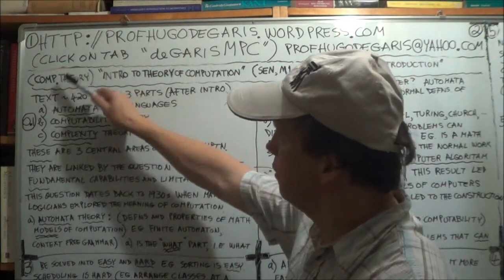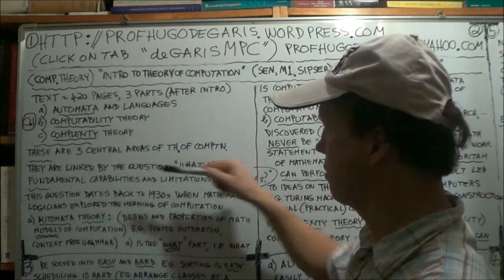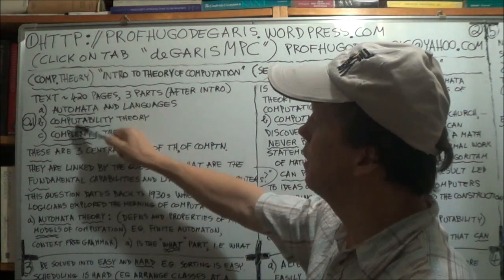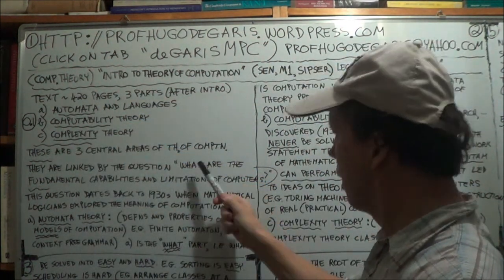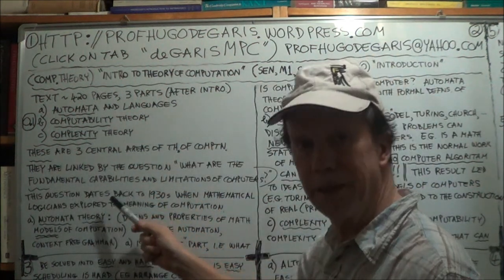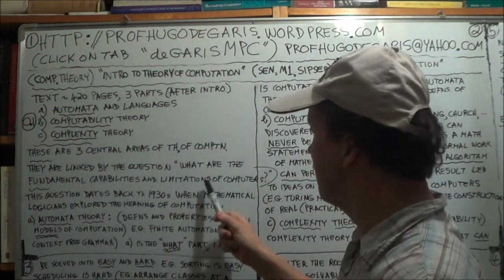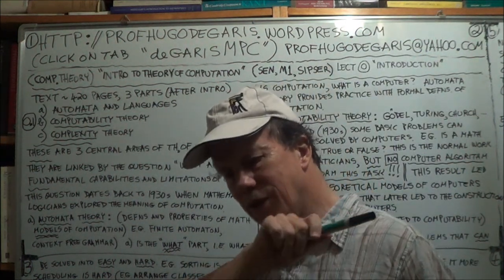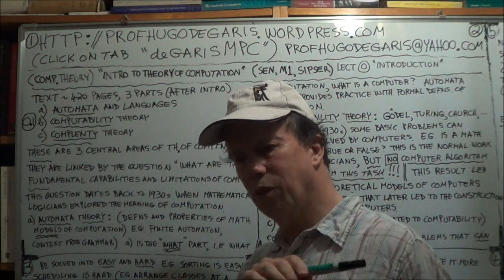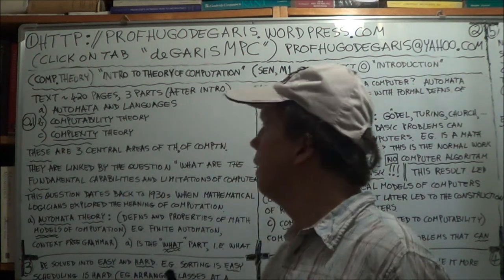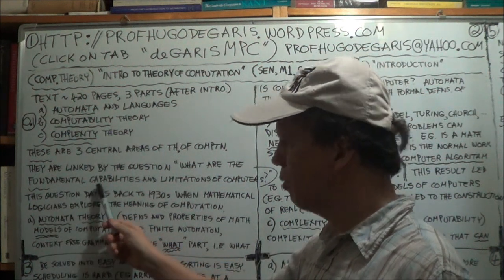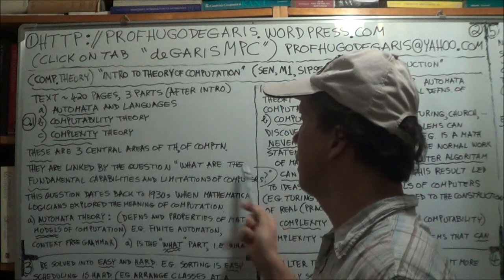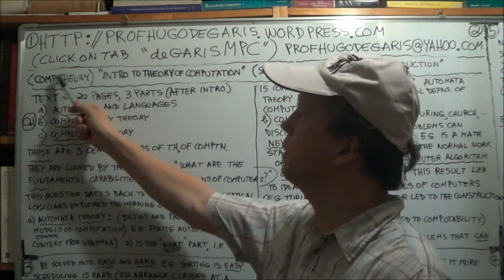So this theory of computation — a critical question that these three topics link to is: what are the fundamental capabilities and the limitations of computers? In other words, what can computers do and what can't they do?